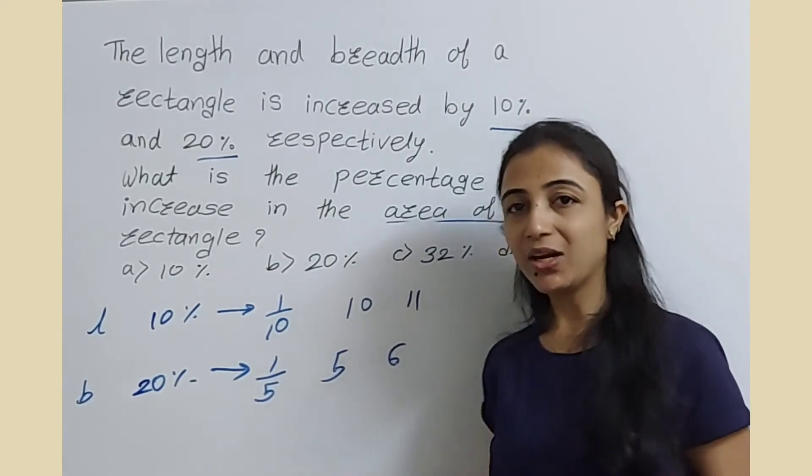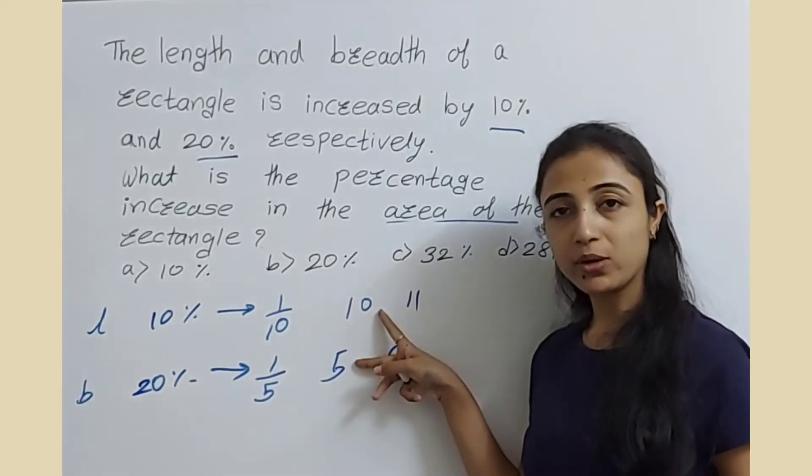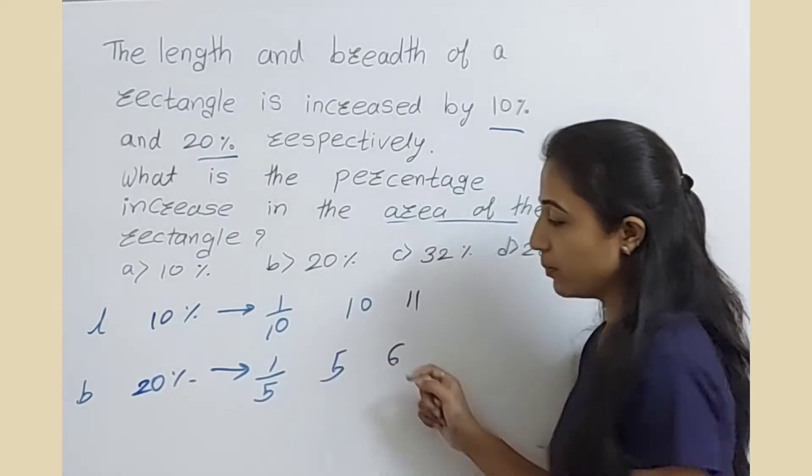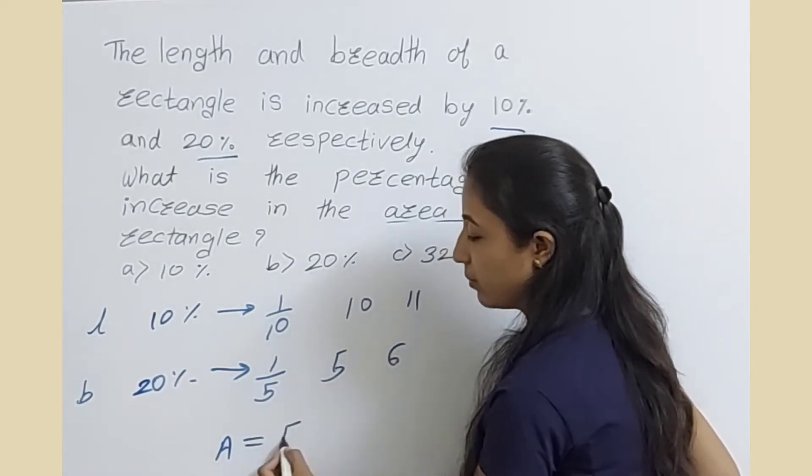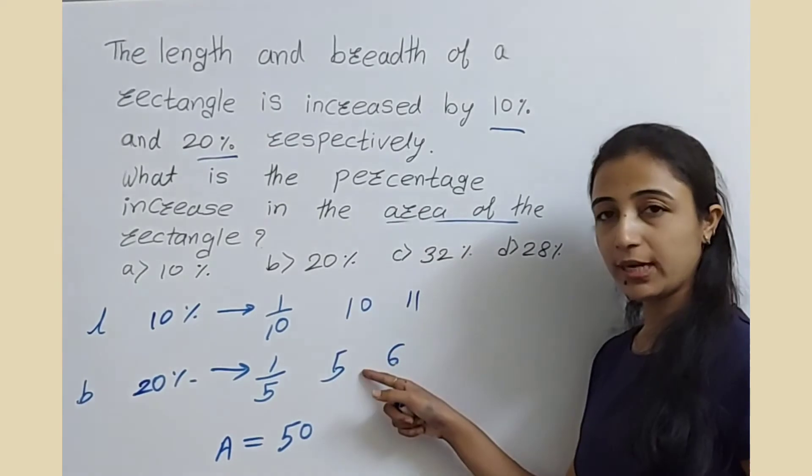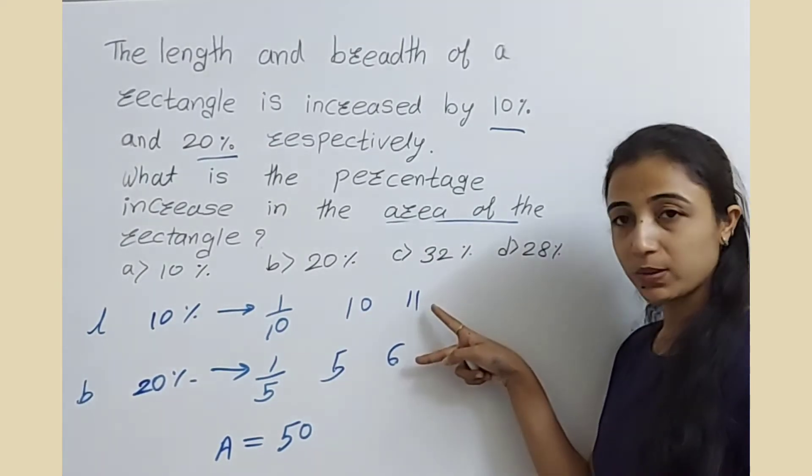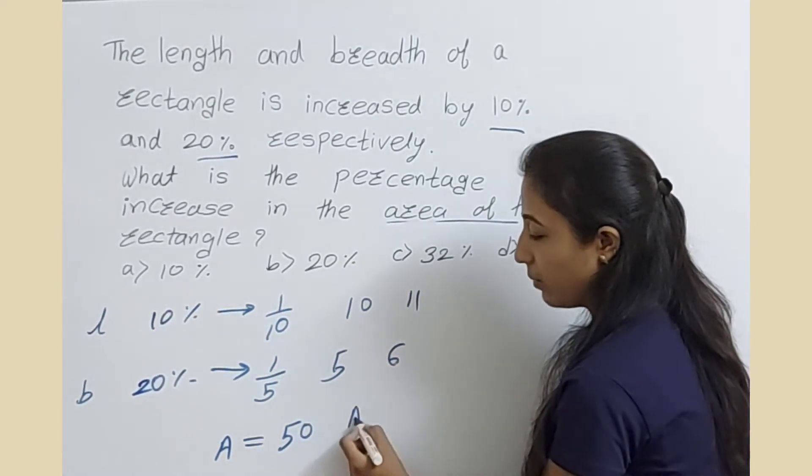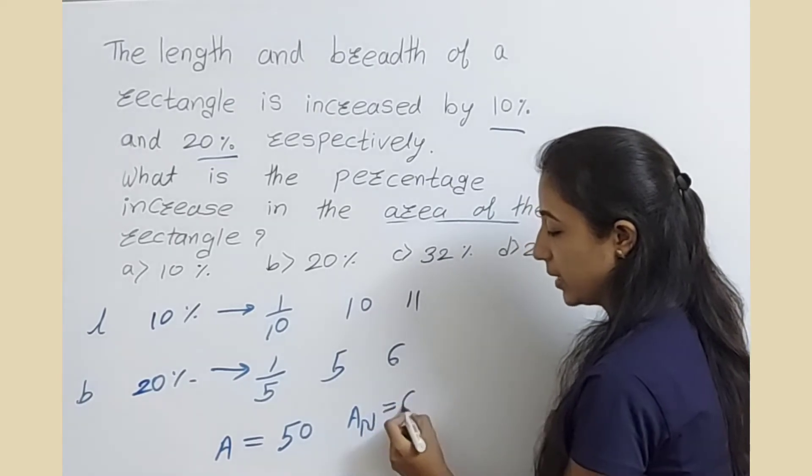We know that the area of a rectangle is the product of length and breadth. Taking the product of the old dimensions, we get area = 50. Taking the product of the new dimensions, the new area = 66.